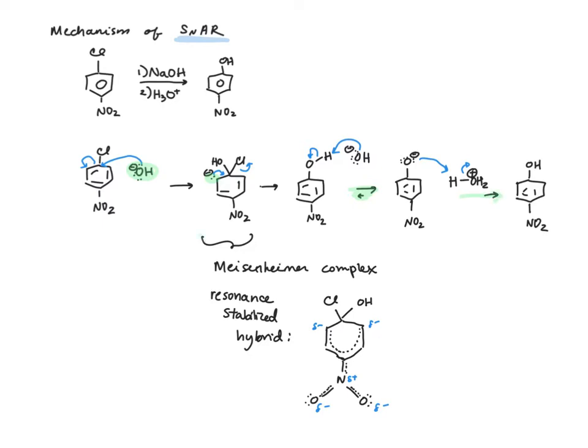This intermediate complex is called the Meisenheimer complex, and it's resonance-stabilized. The nitro group is happy to accept some of that negative charge and delocalize it across the benzene ring and the nitro group.